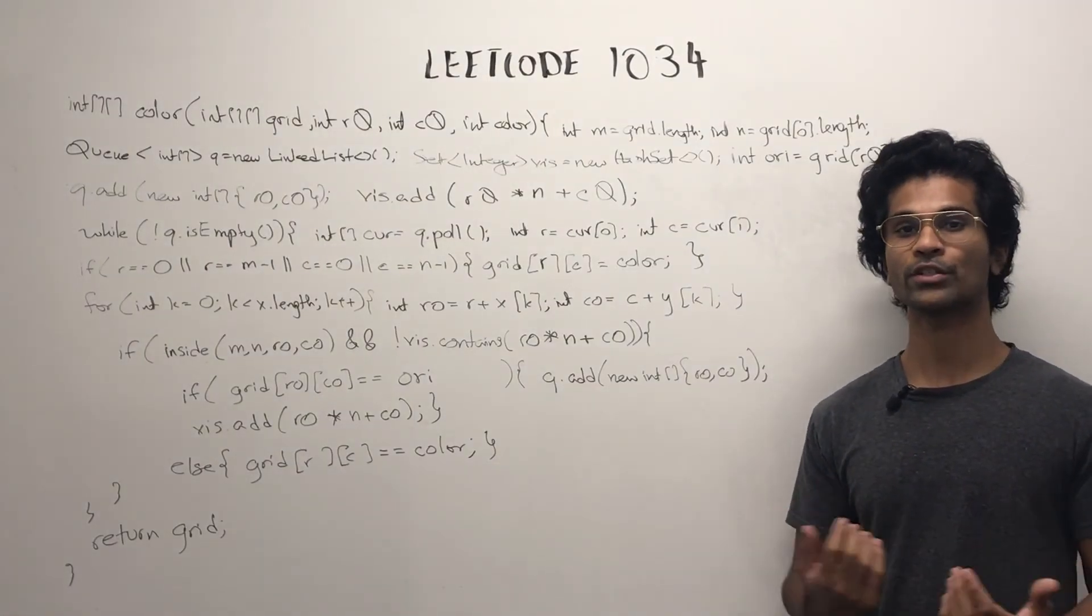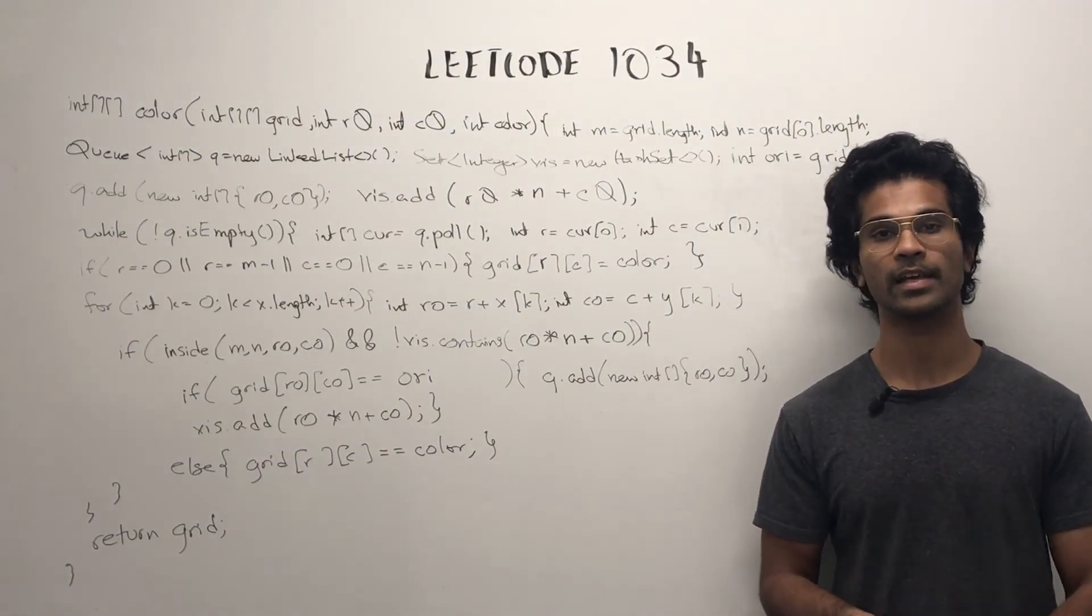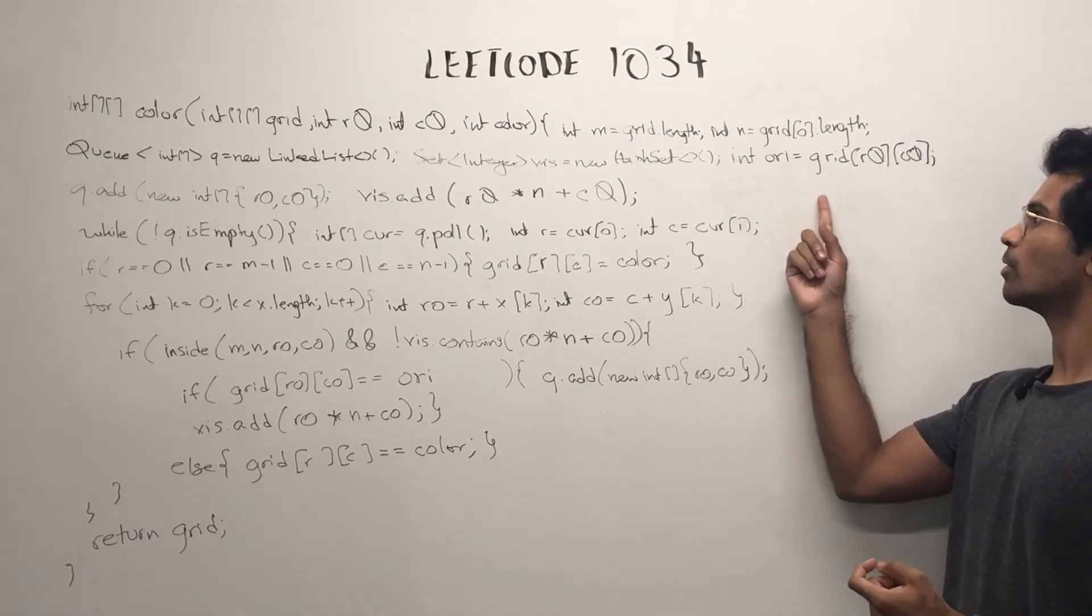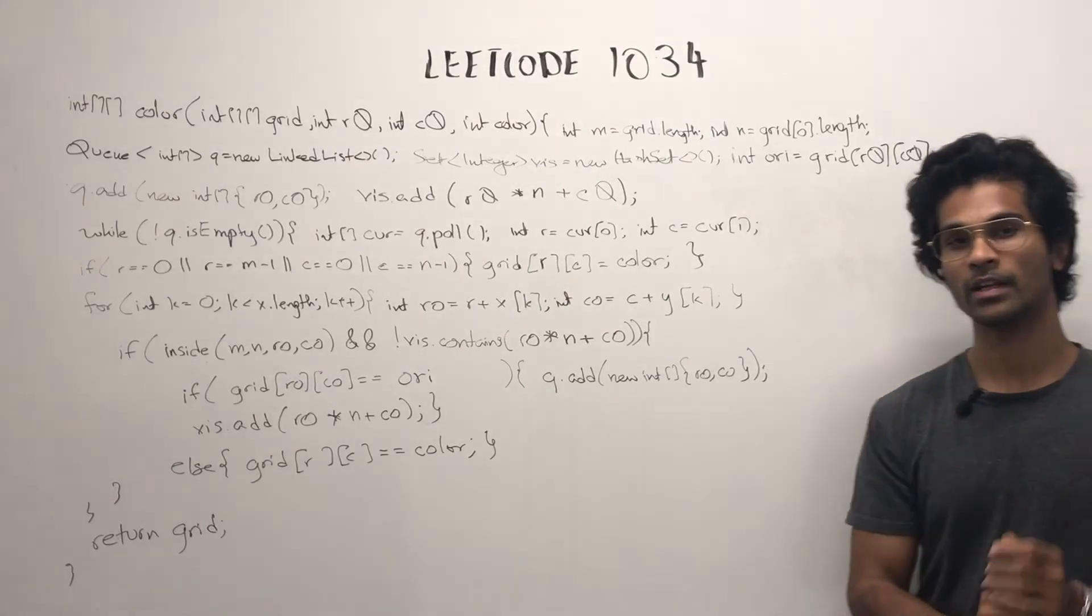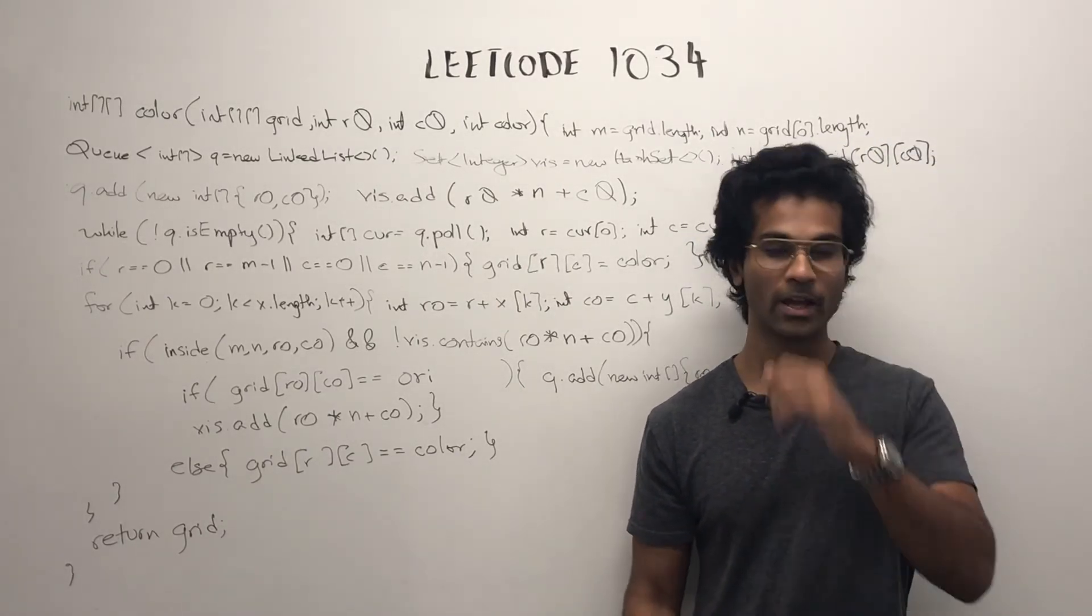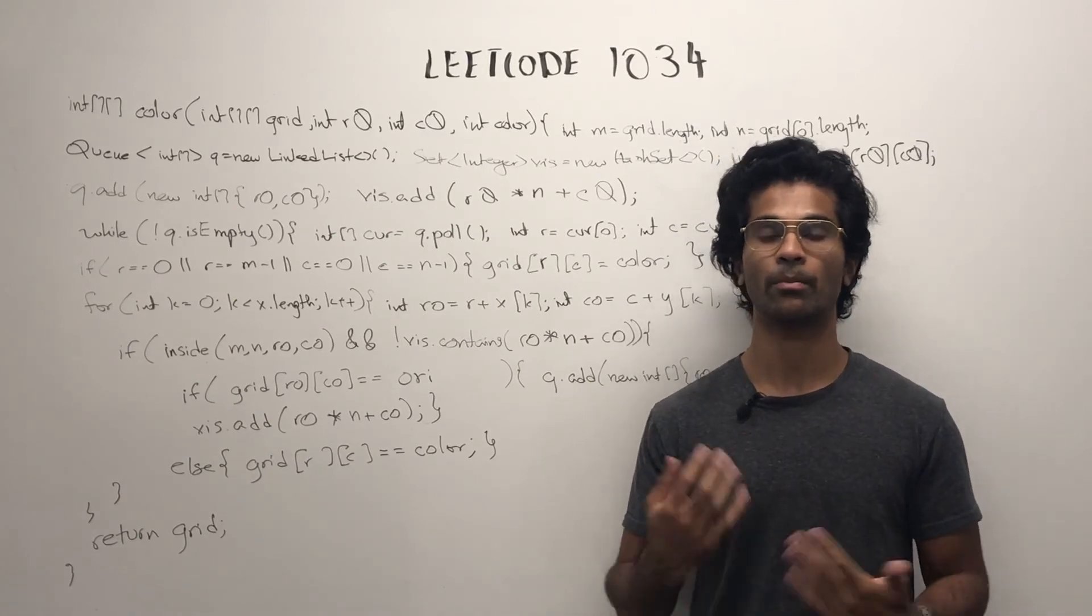Here's the code for the BFS. First, we initialize a queue and a visited set. And we grab the original color in R0 and C0. Then we add our target node to the queue and mark it as visited. And we begin our BFS iteration by pulling the queue as usual.